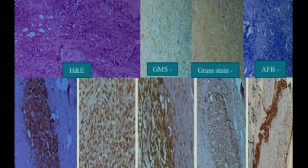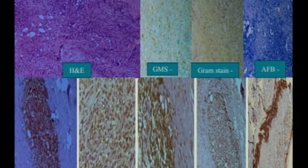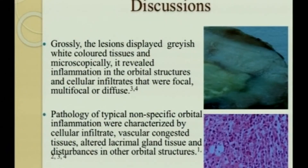H&E stain showed lymphoplasmacytic and eosinophilic infiltration, where GMS gram stain as well as acid-fast bacillus stain was negative. CD20, a B cell marker, was positive at plus 1 or plus 2. CD3 was also positive. CD45 (leukocyte common antigen) was also positive, with positive and negative staining of the B cell marker BCCL, and in one case IgG4 was positive.